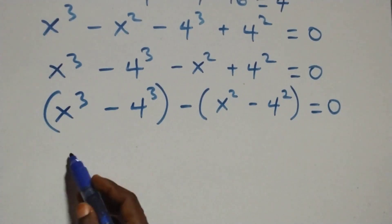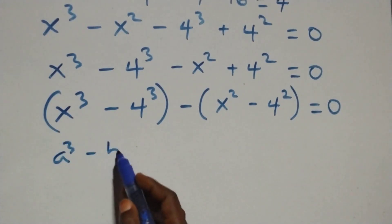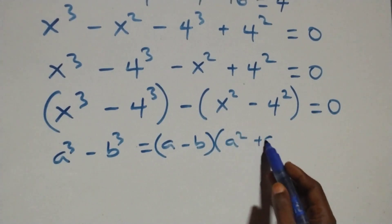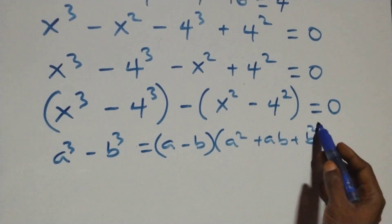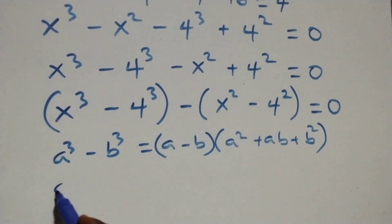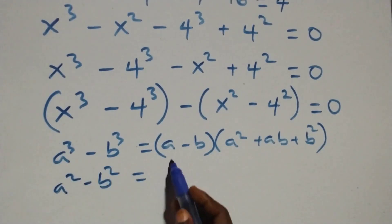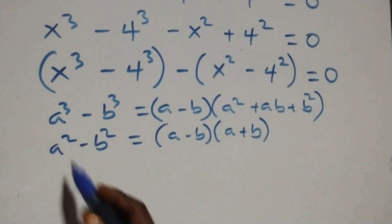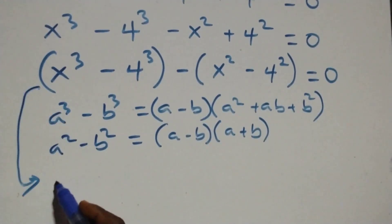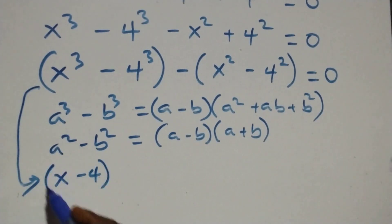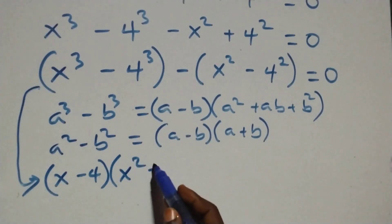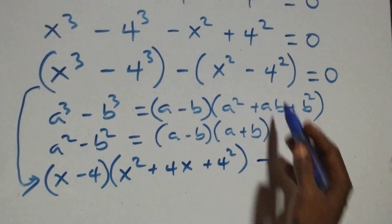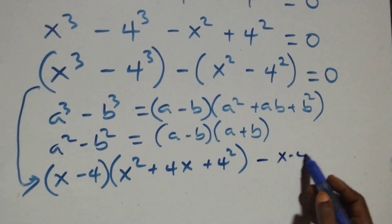The first bracket follows the identity a³ - b³ = (a - b)(a² + ab + b²). The second bracket follows a² - b² = (a - b)(a + b). Applying these, we get (x - 4)(x² + 4x + 4²) minus (x - 4)(x + 4) equals to 0.